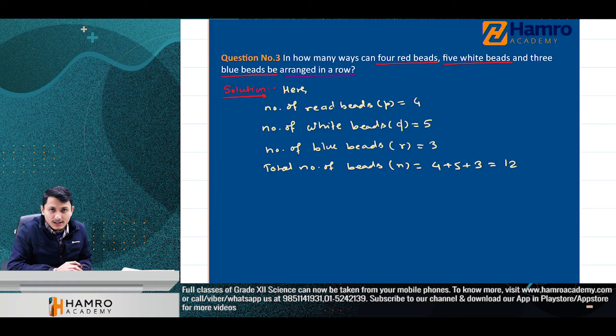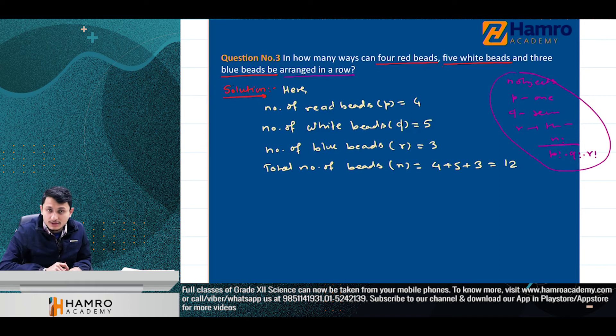Now we need to arrange them in a row, not in a circle. The number of permutations of n objects, of which p objects are of one kind, q objects are of second kind, and r objects are of third kind, is given by n factorial divided by p factorial times q factorial times r factorial.